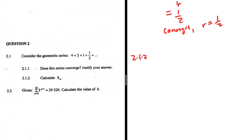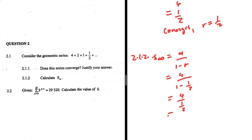2.1.2: calculate S infinity, the sum to infinity. If the series is converging, we can calculate the sum to infinity. Note that 2.1.2 actually hints at the answer to 2.1.1 — we can only calculate the sum to infinity if it converges. The formula is S∞ equals a divided by 1 minus r. So that is 4 divided by 1 minus a half, which equals 8.